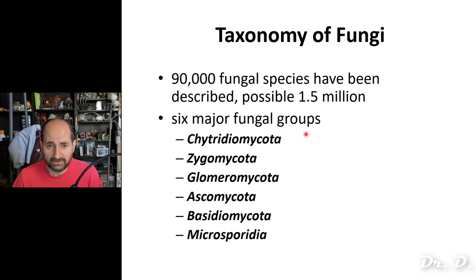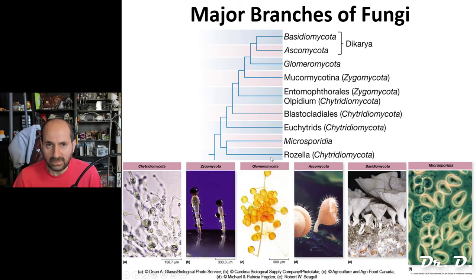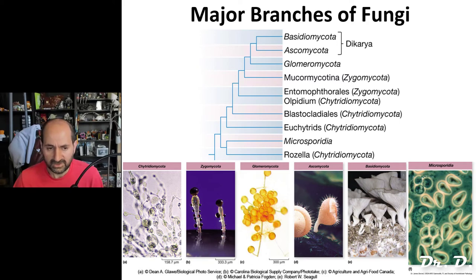Six major fungal groups exist: the Chytridiomycota, Zygomycota, Glomeromycota, Ascomycota, Basidiomycota, and the Microsporidia — which are really unique. There are many different groups within the fungi.